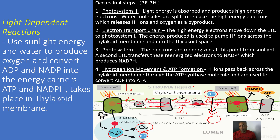Our fourth step is hydrogen ion movement and ATP formation. Hydrogen ions pass back across the thylakoid membrane through the ATP synthase molecule, and are used to convert ADP into ATP. Those hydrogen ions are pushed back across the thylakoid membrane through the ATP synthase, and ADP is converted into ATP.